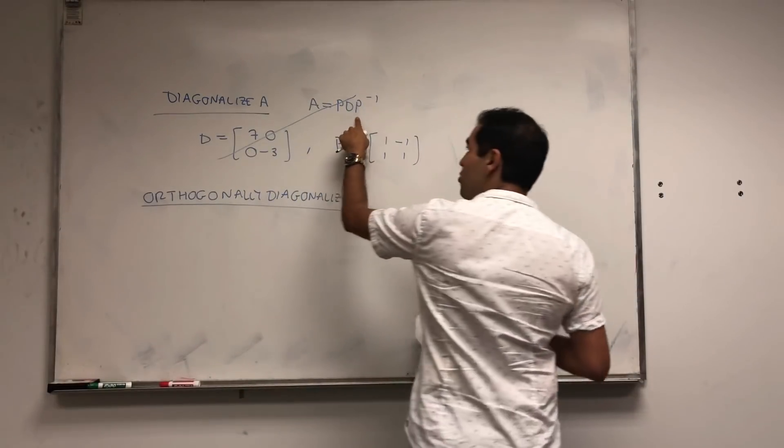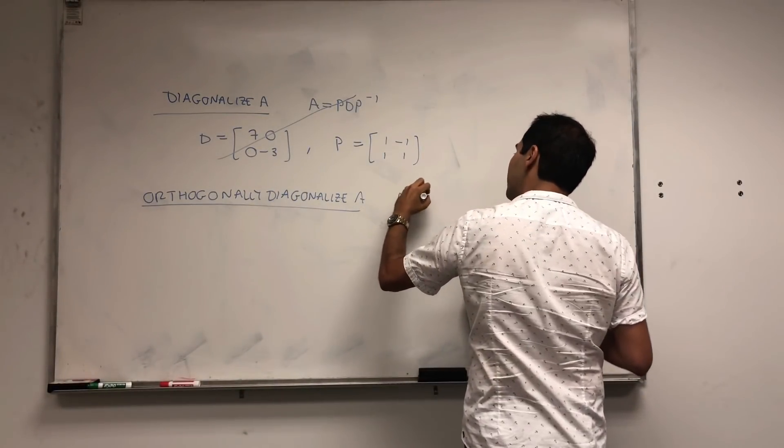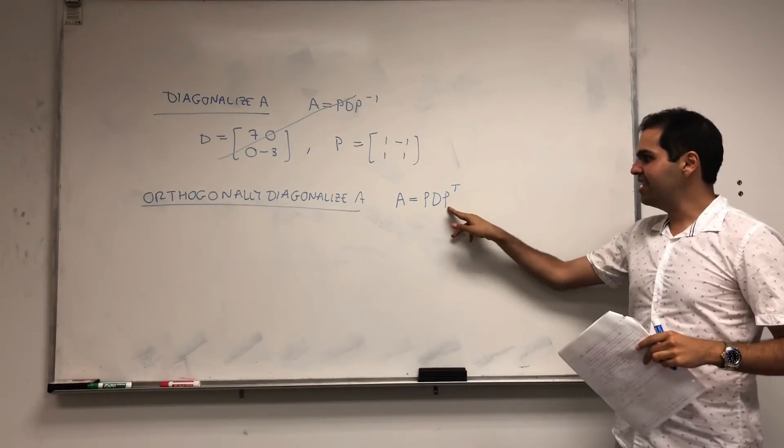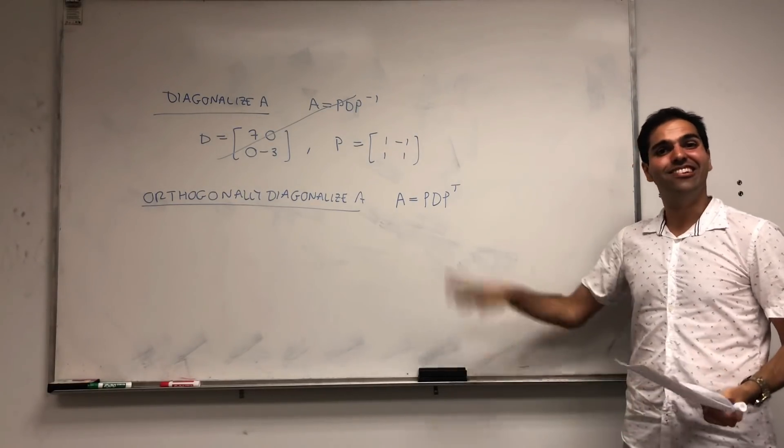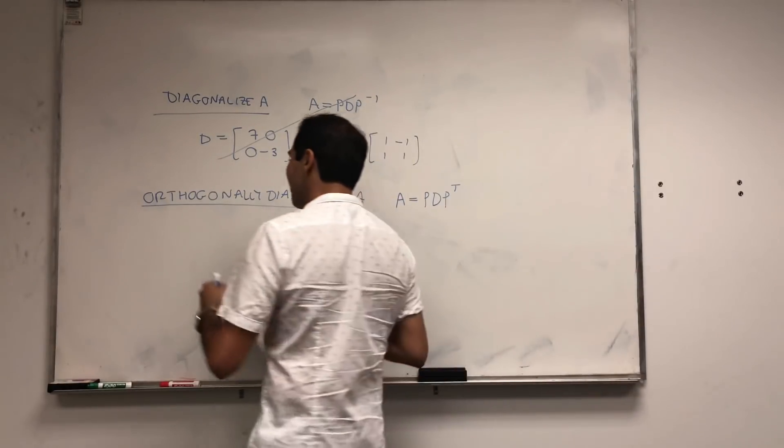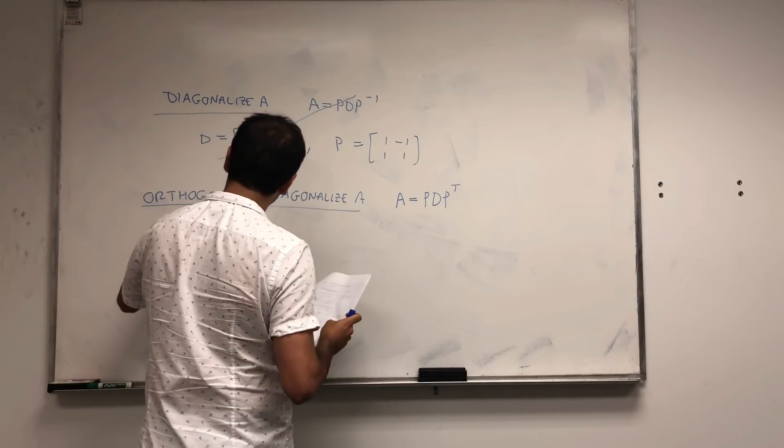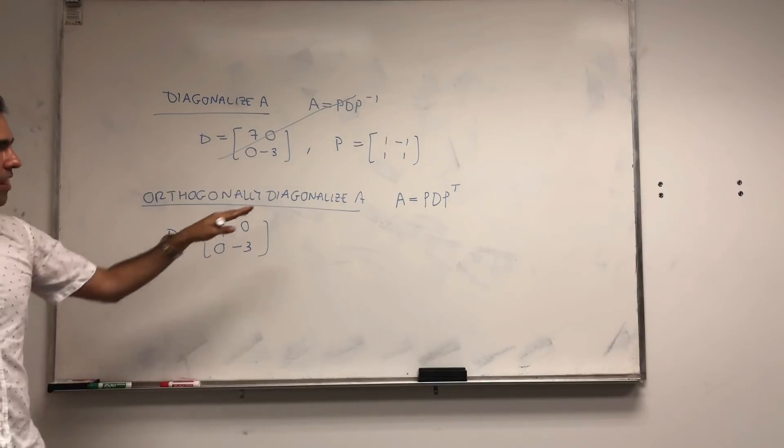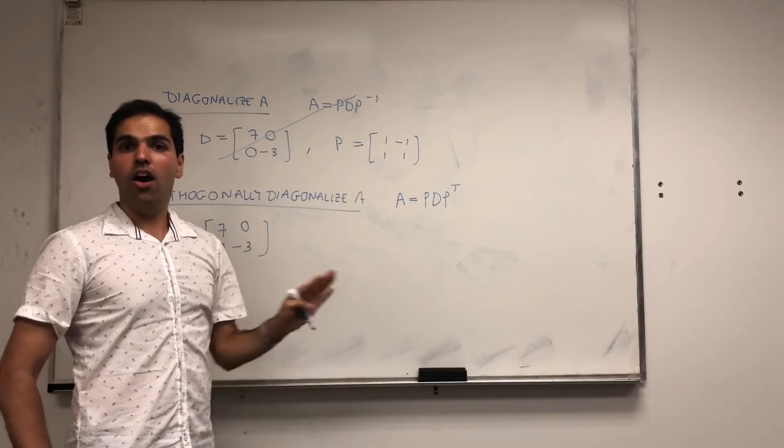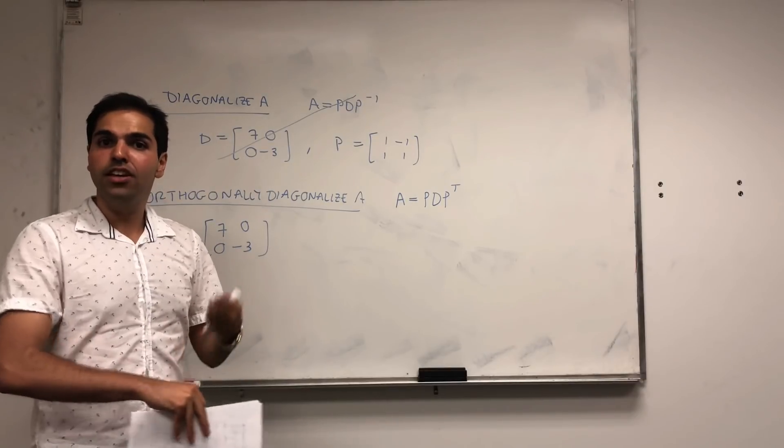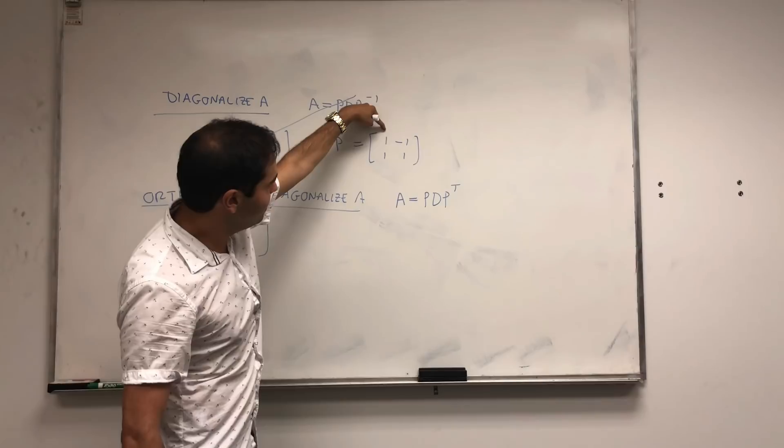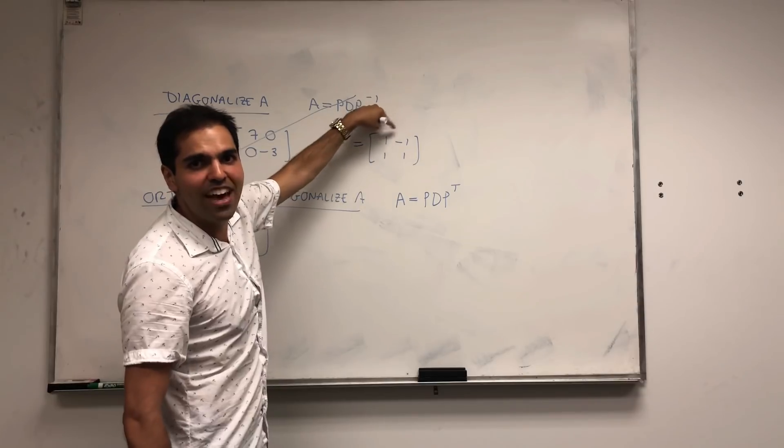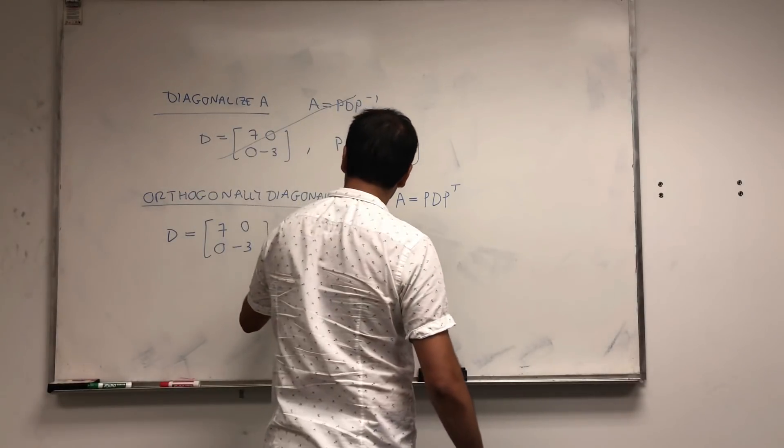So not only can you write A as PDP inverse, we can actually write A as PDP transpose. For orthogonal diagonalization, it's easy to calculate P inverse. It's just P transpose. And not only that, it's essential here. And how do you do this? It's actually not that bad. First, you find the eigenvalues, and then you find the eigenvectors. And all you have to do on each eigenspace, you use the Gram-Schmidt process.